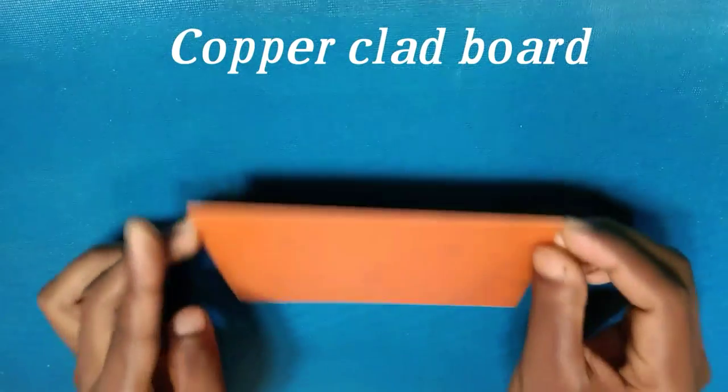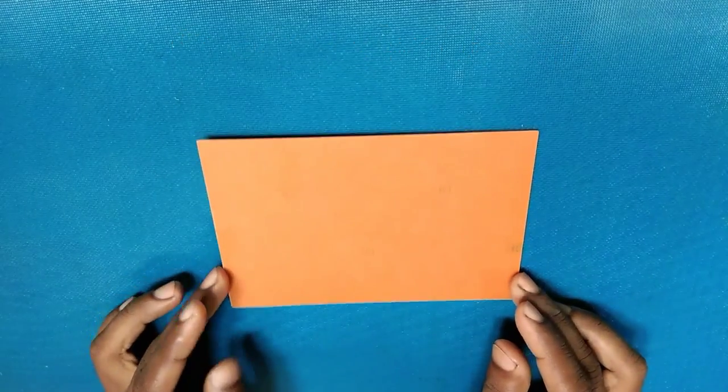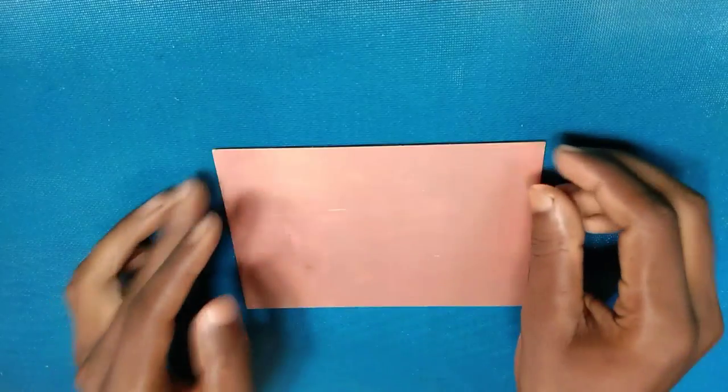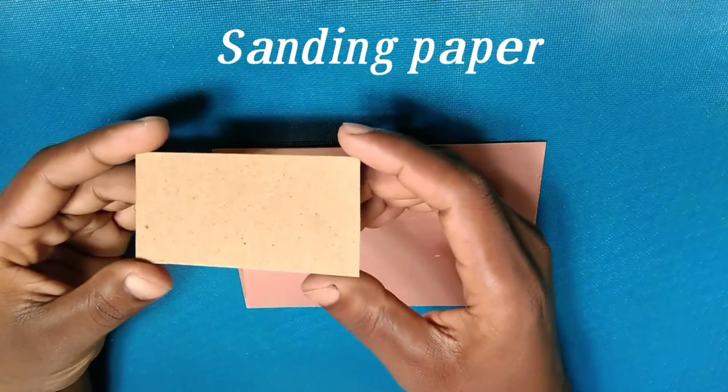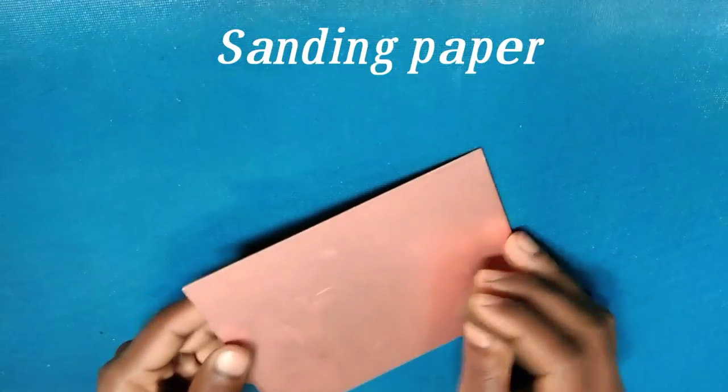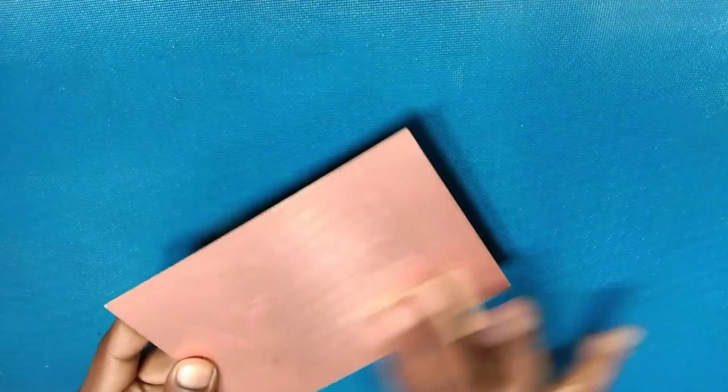Now take the copper clad board which you want to etch. Link to buy is given in the description box below. Take the sanding paper and sand the copper surface thoroughly. This is done to remove dirt and make a rough surface so that toner would stick properly. Repeat the process till you get a shiny rough surface. Don't sand excessively or the copper film may get removed.